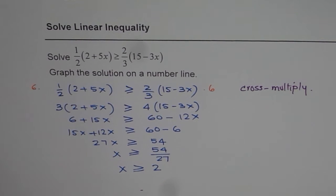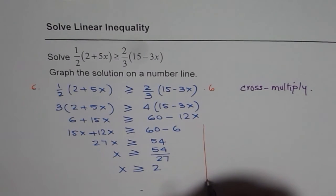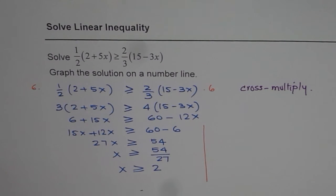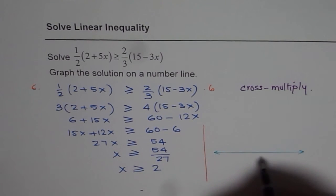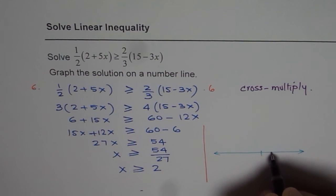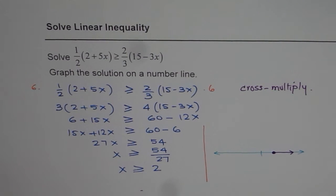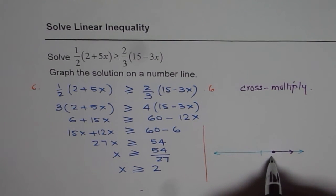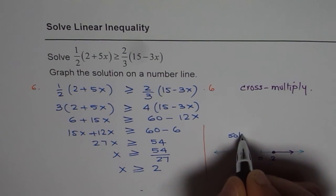Don't forget to show your answer on the number line also. Let's draw the number line extending both sides. Our solution is x greater than or equal to 2. Equal to means it is included, so this point is included, and the arrow indicates that x is greater than or equal to 2. This point here is 0, so that is the solution on the number line.